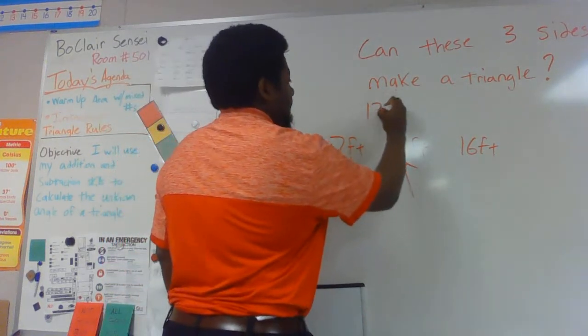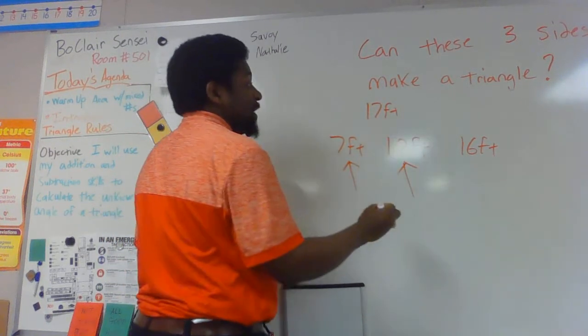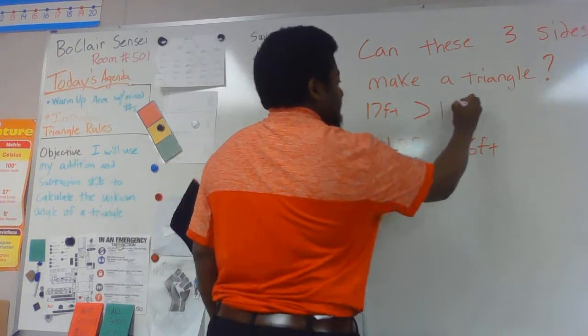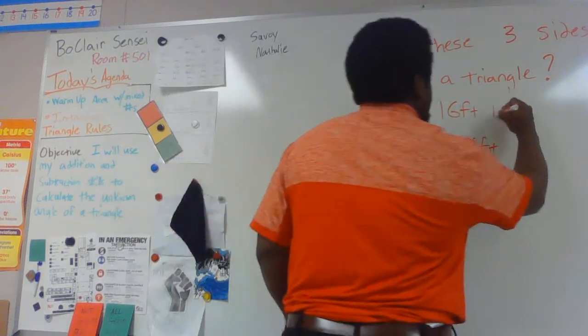7 feet plus 10 feet is 17 feet. Since that is greater than 16 feet, yes this would make a triangle.